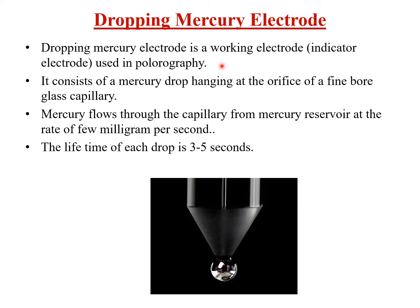In polarography we use two types of electrodes: an indicator electrode and a reference electrode. So this dropping mercury electrode is the working or indicator electrode. It consists of a mercury drop hanging at the orifice of a fine bore glass capillary, where a new mercury drop is formed at particular time intervals. The mercury flows through this capillary from the mercury reservoir at a rate of a few milligrams per second, and the lifetime of each drop is three to five seconds.